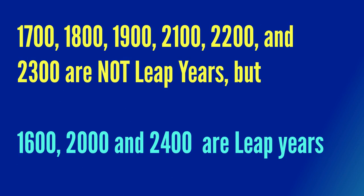Conversely, 1600 and 2000 had a leap day, and 2400 will have a leap day even though they are divisible by 100, because they are also divisible by 400.